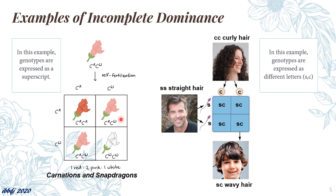In this example, we cross pink snapdragons having RW genotypes, and this ultimately produces different phenotypes: 25% red phenotype, 25% white phenotype, and 50% pink phenotype. To the right, we have another example on human hair. Alleles here are also in different letters — SS for straight hair, CC for curly hair. Even though the genotype appears as both homozygous, it will ultimately produce a heterozygous offspring having the SC genotype, and this will produce a phenotypic expression in between the parents, which is wavy hair.